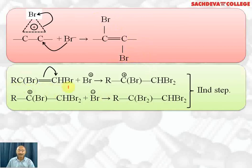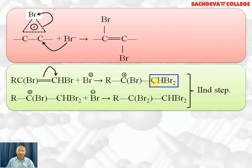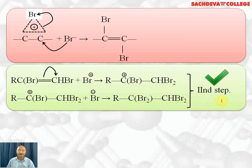In the second step, the dibromo compound reacts with Br⁺ (the electrophile already generated). Br⁺ attacks one carbon as the pi electrons shift, forming CHBr₂. That carbon becomes positively charged, and it then reacts with Br⁻, which attaches to that carbon. We get a tetrabromo compound as the final addition product. This completes the second step of the reaction.